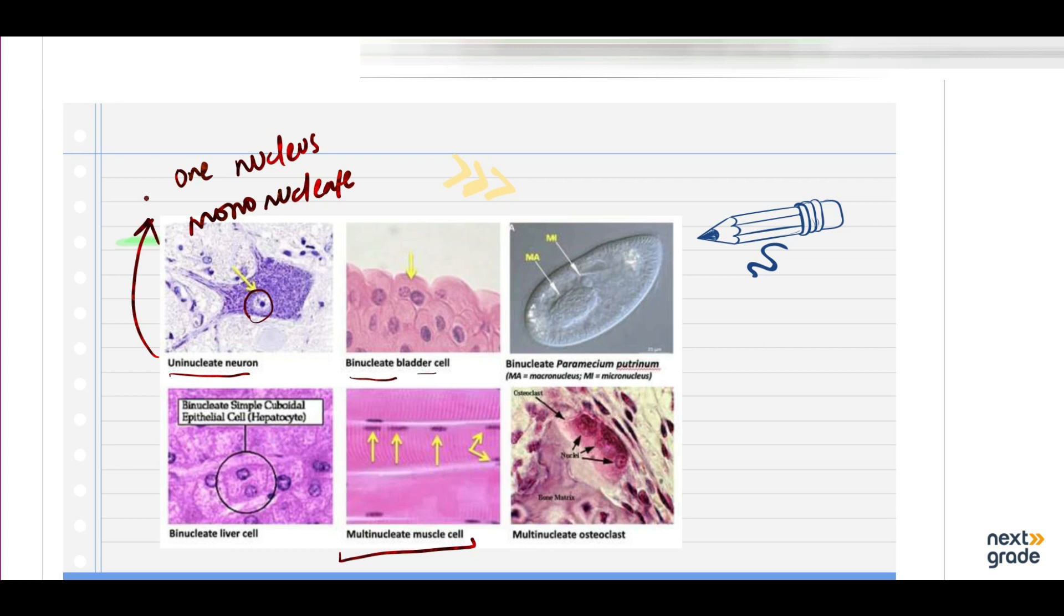Then you have seen paramecium and you have seen the liver cells here. There are multi nuclei muscle cells here. See this multinucleate nucleus, and this is osteoclast. Here you have also three cells. This is how the nucleus is presented in different kinds of cells.